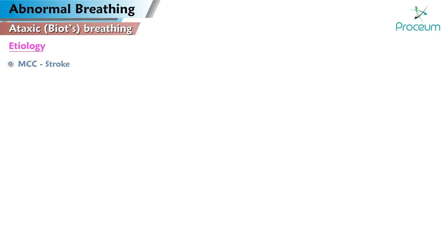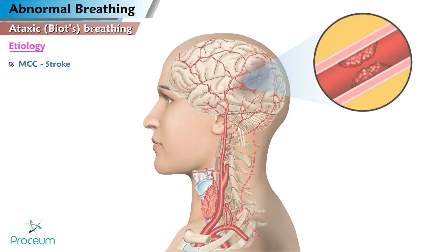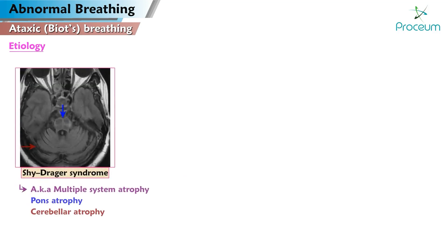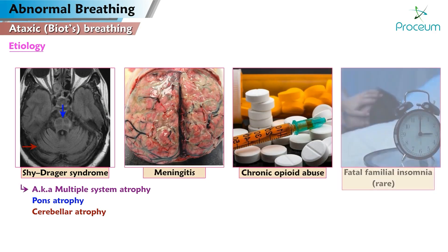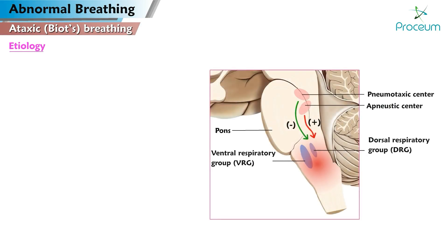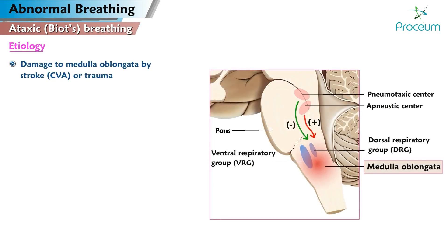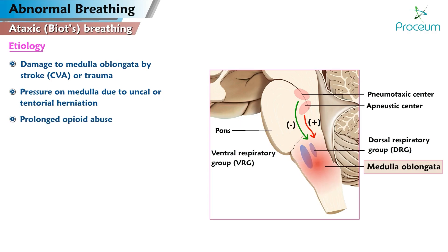Etiology. The most common cause is stroke. Less common causes include some neurodegenerative disorders — for example, Shy-Drager syndrome — meningitis, chronic opioid abuse, and fatal familial insomnia, which is rare. Biot's breathing is usually caused by damage to the medulla oblongata by stroke, CVA, or trauma, or pressure on the medulla due to uncal or tentorial herniation. It can also be caused by prolonged opioid abuse.